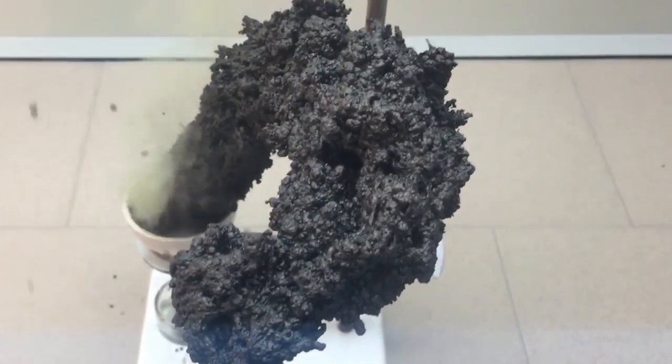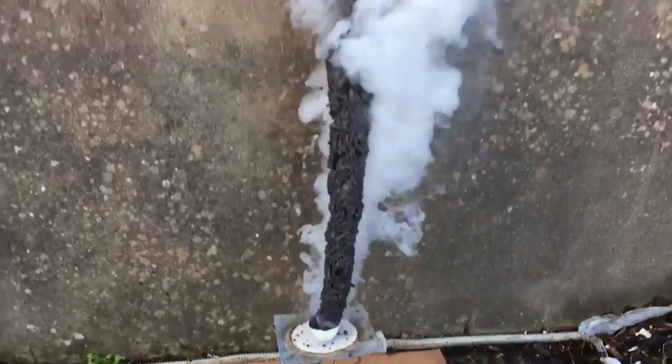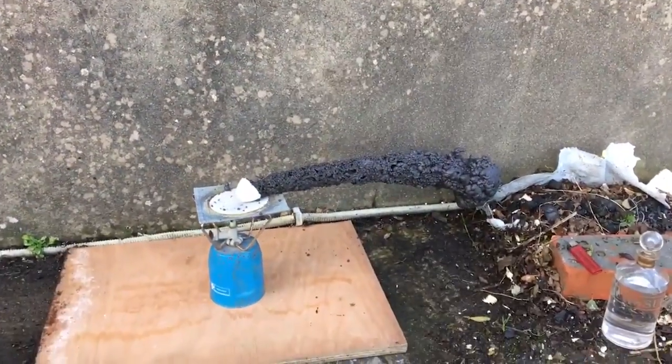When the two substances are placed in a container above a heat source, at first it looks like very little will happen. There's definitely movement where the liquid appears to be expanding, but suddenly it releases a cloud of smoke. Once this clears, a huge pillar of carbon polymer has been formed, seemingly out of nowhere.